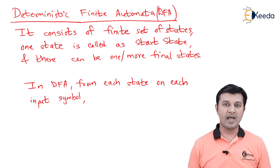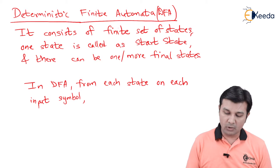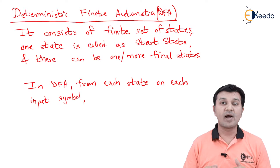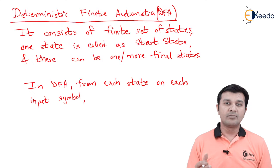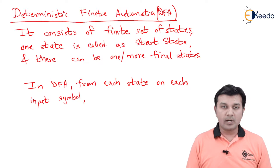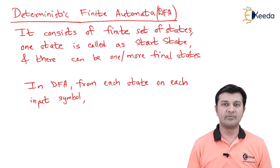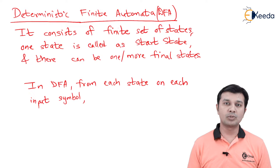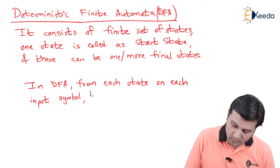When I talk of Deterministic Finite Automata, it is an automata that consists of a finite set of states — just like my Finite State Machine, my FSM, my Finite Automata. Here also we have a finite set of states. One state will be called the start state, and there can be one or more final states.